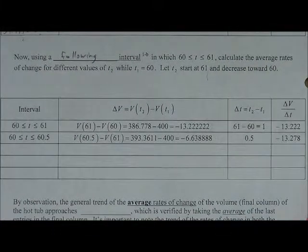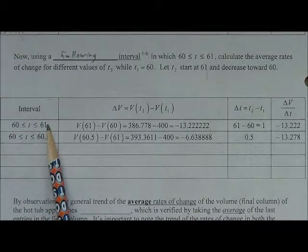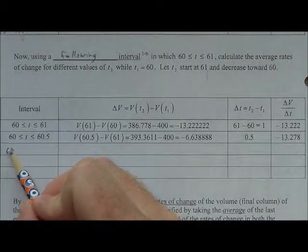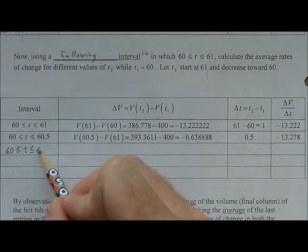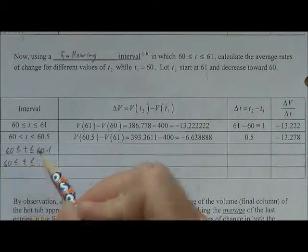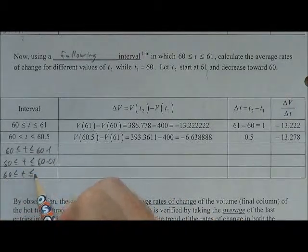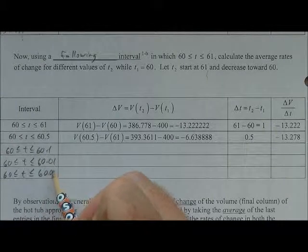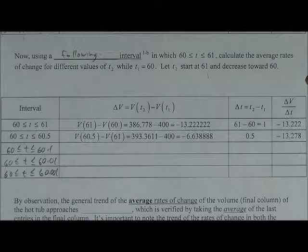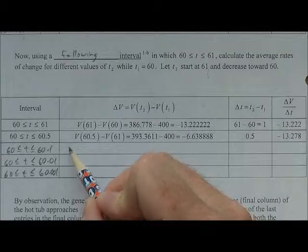And so the same kind of idea as before, T1 is staying constant at 60, T2 is going to be changing, 61, then 60.5, then change this to 60.1, and then we're going to change that to 60.01, and then finally to 60.001 to keep the same level of accuracy as the preceding interval.